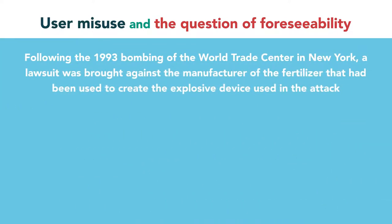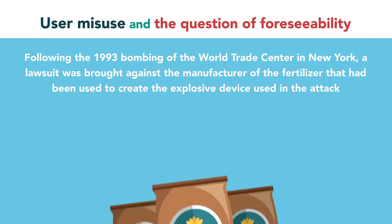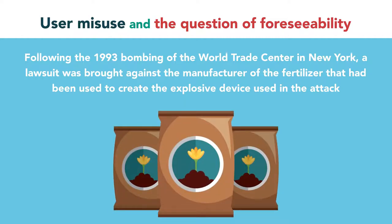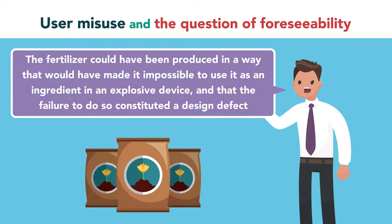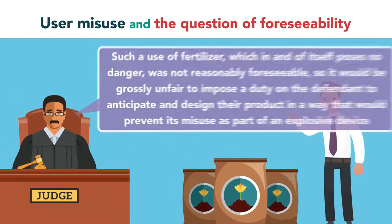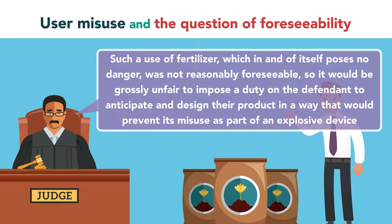Following the 1993 bombing of the World Trade Center in New York, a lawsuit was brought against the manufacturer of the fertilizer that had been used to create the explosive device used in the attack. The plaintiff argued that the fertilizer could have been produced in a way that would have made it impossible to use it as an ingredient in an explosive device, and that the failure to do so constituted a design defect. However, the court ruled that such a use of fertilizer, which in and of itself poses no danger, was not reasonably foreseeable. As such, it would be grossly unfair to impose a duty on the defendant to anticipate and design their product in a way that would prevent its misuse as part of an explosive device.